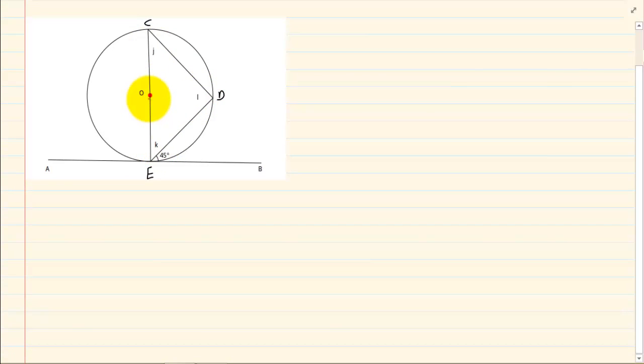Now again we have a center and we have the tangent AB. Immediately you can tell me that this entire angle, CEB is going to equal to 90 degrees. Why? Tangent perpendicular to radius.